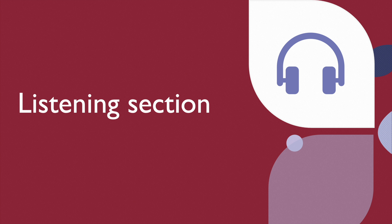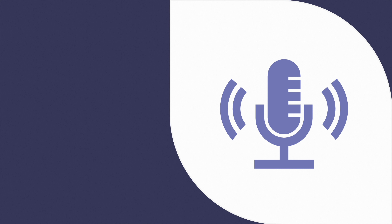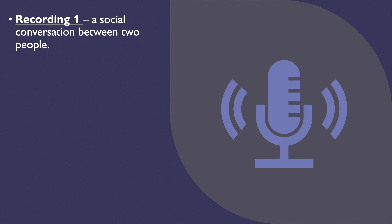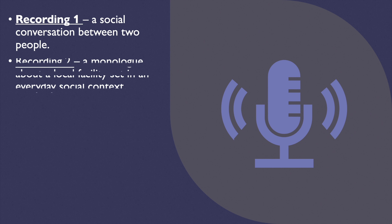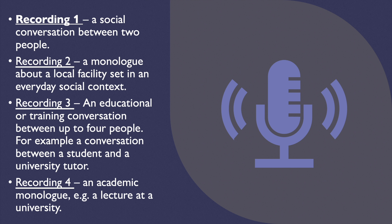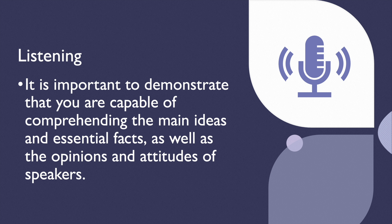In the listening section, you will listen to 4 recordings of native English speakers and answer a series of questions. The first recording is a social conversation between 2 people. Recording 2 is a monologue about an everyday social situation involving a local facility. Recording 3 is an educational or training conversation between up to 4 people, such as a tutor and student talking. Recording 4 is an academic monologue, like a university lecture. You must demonstrate that you can comprehend the main ideas and essential facts, as well as speakers' opinions and attitudes.